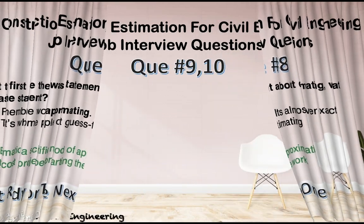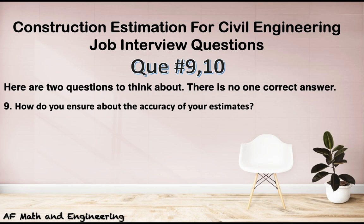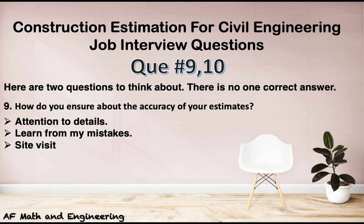The last two questions have no single correct answer. Number nine: how do you ensure the accuracy of your estimate? My three picks for mistakes new estimators commonly make: one is attention to detail — always be fully attentive to the details. Two is to learn from your mistakes — when you make a mistake, you lose money, and you can't repeat it twice. The third, which is kind of surprising, is the site visit. A lot of estimators don't visit their sites, and then contractors make a lot of money. So spend time on a site visit — it's important, it might save your work.